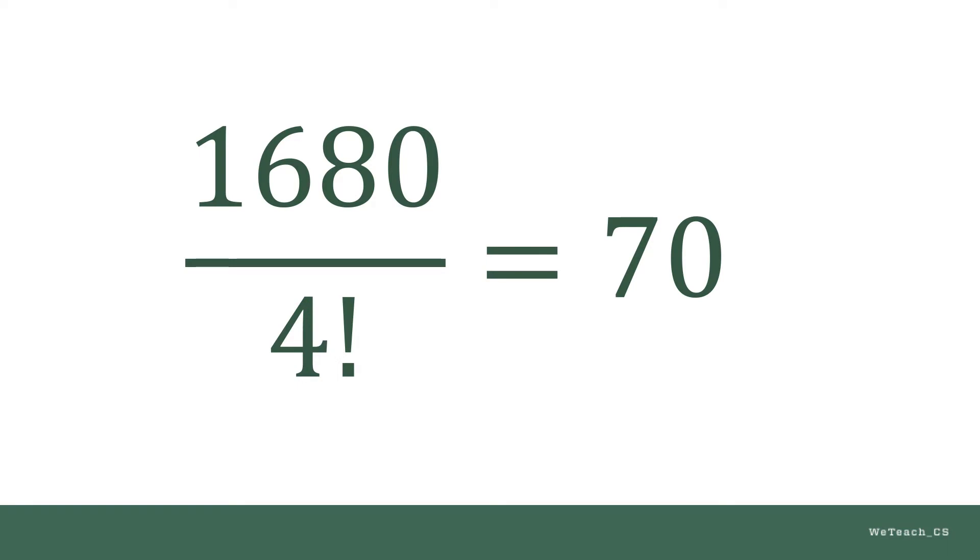And we divide this by 4 factorial for redundancy for each permutation, and we get 1,680 divided by 4 factorial, which equals 70 combinations.